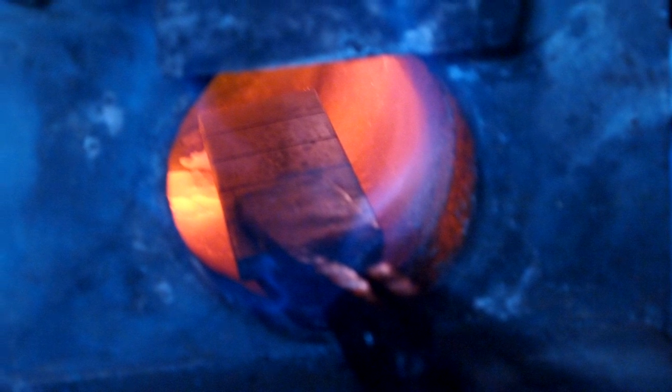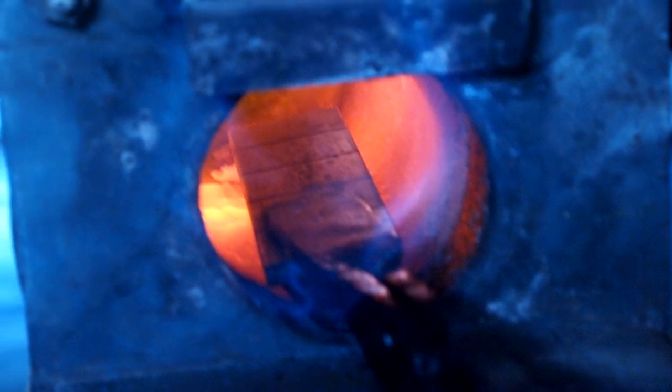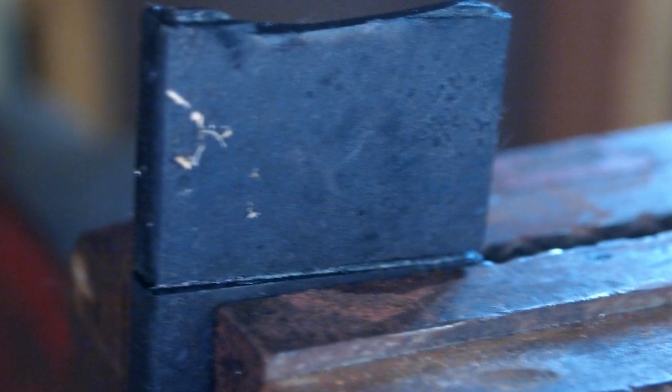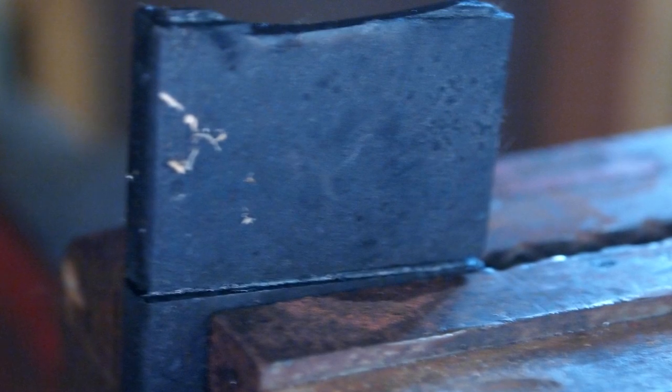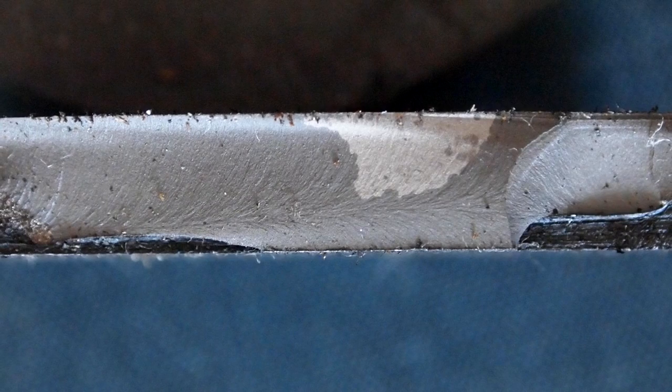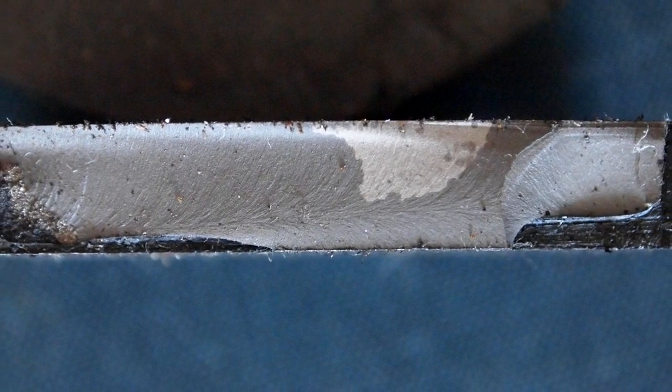So I put it back in the forge again, brought it up to critical temp and quenched it again. Then I put it back in the vise and broke it along the score line. As you can see, the grain is already a lot smaller.